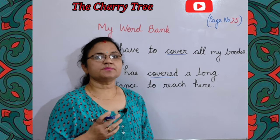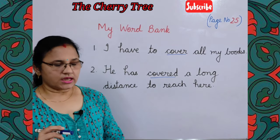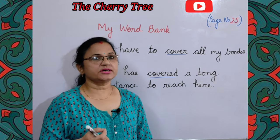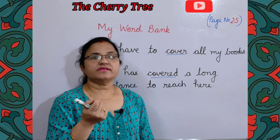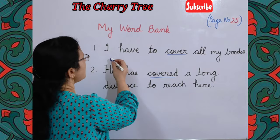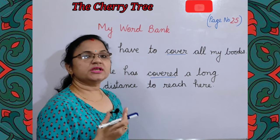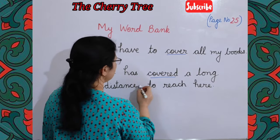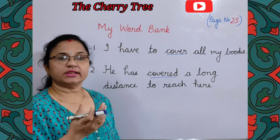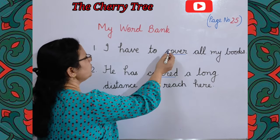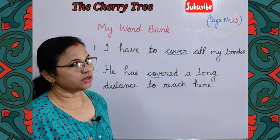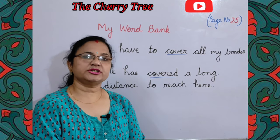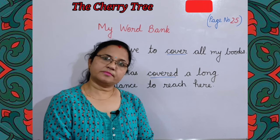The last exercise of this chapter is 'My Word Bank' on page number 25: make two sentences with the word 'cover', each with a different meaning. Example one: 'I have to cover all my books' — meaning to put a cover on them. Example two: 'He has covered a long distance to reach here' — meaning to travel a distance. In both sentences, 'cover' has different meanings. That's all for today. Like, comment, share and subscribe to my YouTube channel. Bye-bye, thanks for watching.